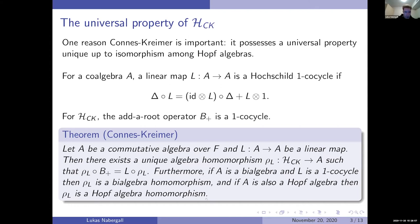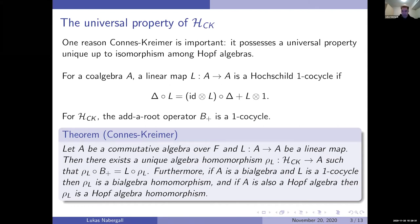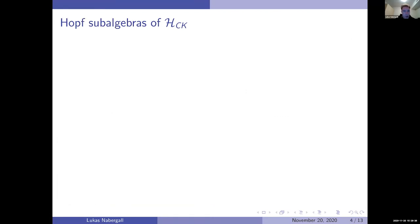If you assume a bit more about A — specifically that A is a bialgebra and L is a 1-cocycle — then this homomorphism ρ_L is a bialgebra homomorphism. And if A is also a Hopf algebra, then the homomorphism becomes a Hopf algebra homomorphism. These are both just saying that it's compatible with that structure.